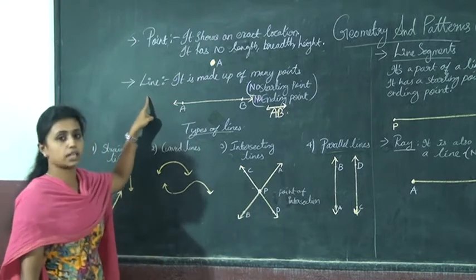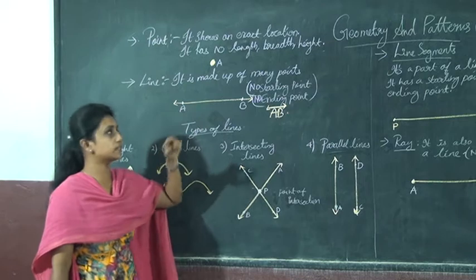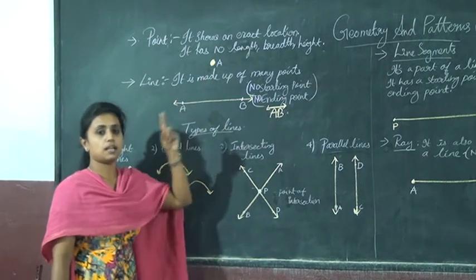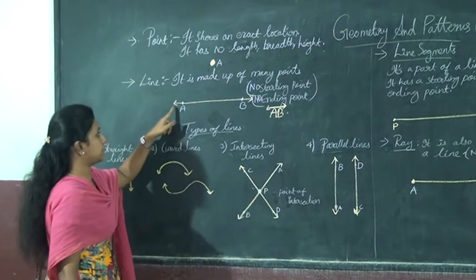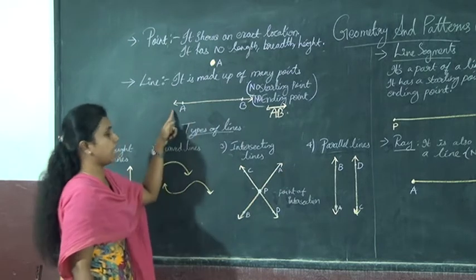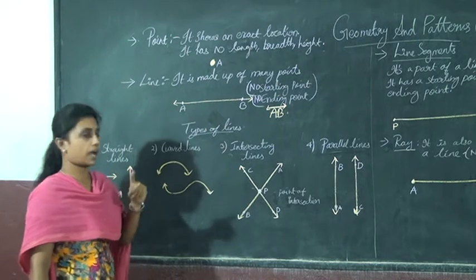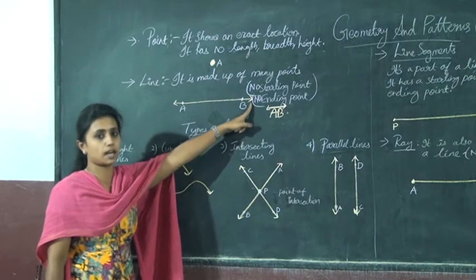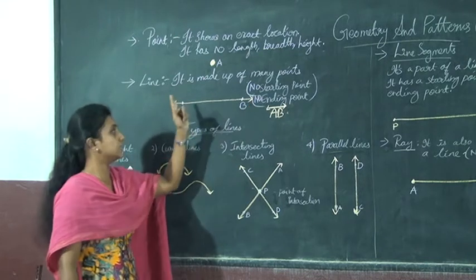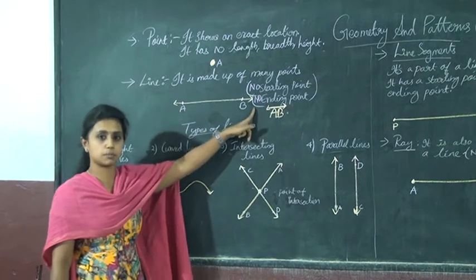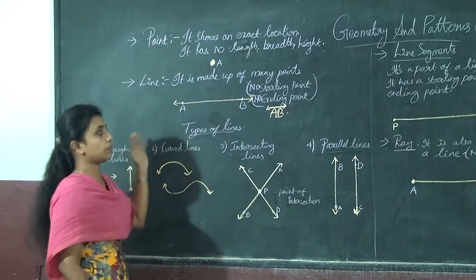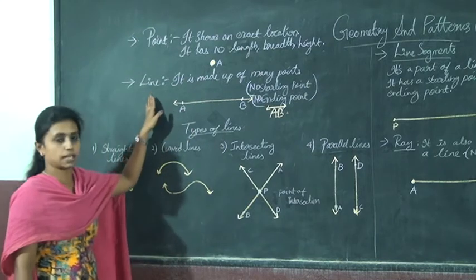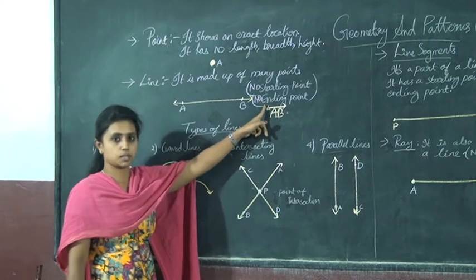And what about line? A line is made up of many points. It has two-sided arrows. To represent a line, you need to draw or mark two-sided arrows. It has no starting point and no ending point.